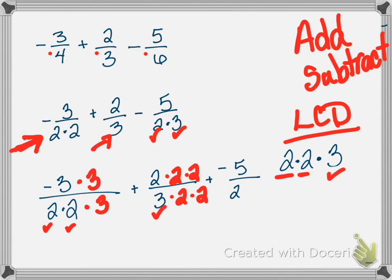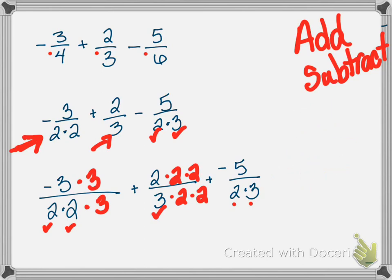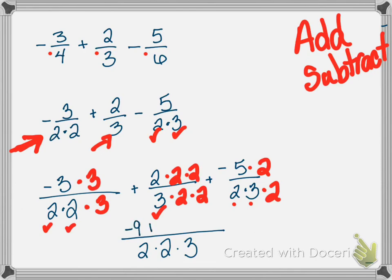Now every fraction has the same LCD of 2 times 2 times 3. Multiplying out the numerators: negative 3 times 3 is negative 9; 2 times 2 times 2 is 8; negative 5 times positive 2 is negative 10. So negative 9 plus positive 8 is negative 1; negative 1 plus negative 10 is negative 11. Final answer: negative 11 over 12.